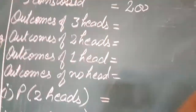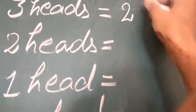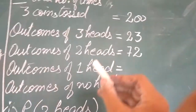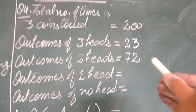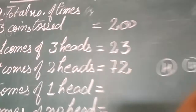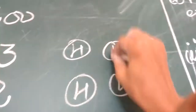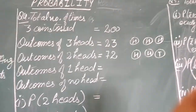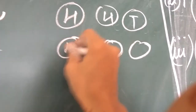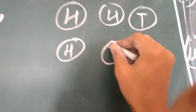From the table: all 3 coins got 3 heads for 23 times. It is given that 2 heads appeared for 72 times — on 3 coins, 2 faces are heads, so the 3rd coin must have 1 tail. Outcomes of 1 head: 1 head appeared 77 times, meaning on 1 coin it is head, and the other 2 coins are facing tail.